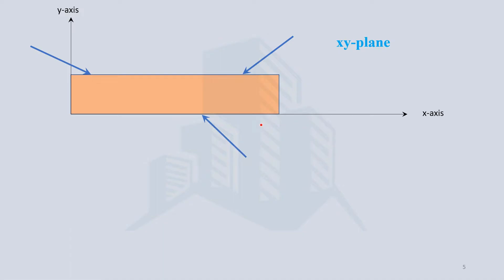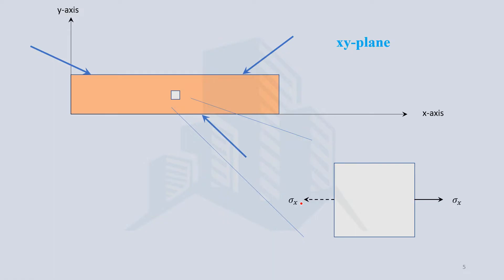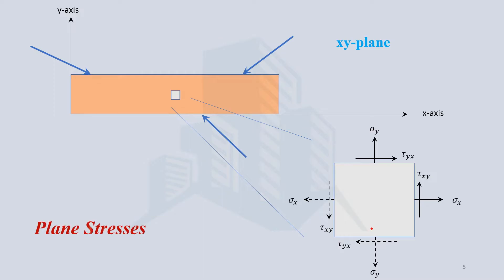Considering the forces in the z direction as negligible, the same element can now be represented in the x-y plane. We have normal stress in the x direction balanced by the opposite normal stress, and normal stress in the y direction balanced by the opposite normal stress. There is also shear stress tau x-y, balanced by opposite shear stresses, with the magnitude of tau x-y equal to tau y-x for equilibrium. These are the plane stresses.